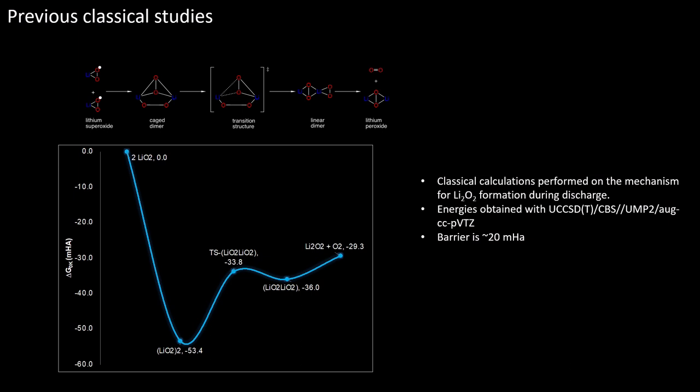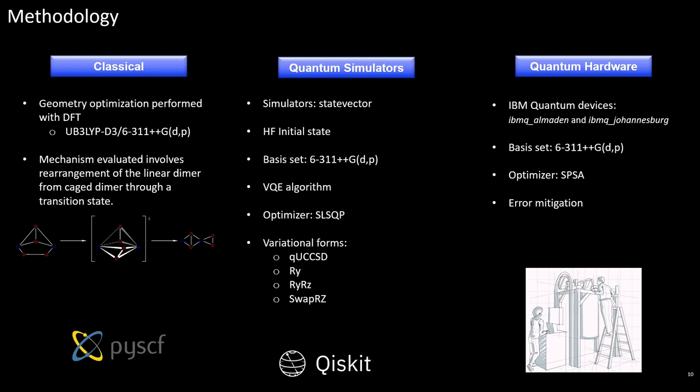Classical calculations have previously been performed on the mechanism for lithium peroxide formation during discharge. The reaction profile shown here was obtained from a procedure in which geometries were first optimized with unrestricted MP2 method with a large basis set, and single point calculations were performed on these geometries with unrestricted CCSD(T) calculations at a complete basis set level. The mechanism involves dimerization of lithium superoxide to form a cage dimer, which in turn rearranges to form a linear dimer that then disproportionates into lithium peroxide and oxygen. It was observed that the barrier is approximately 20 millihartrees.